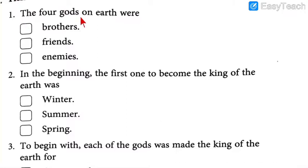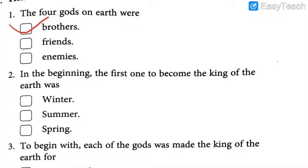Number one: The four gods on earth were — options: Brothers, Friends, or Enemies. What were they in relation to each other? Your countdown starts now — 5, 4, 3, 2, 1. The correct answer is Brothers. The four gods on earth were neither friends nor enemies — they were real brothers.